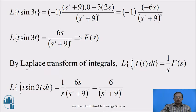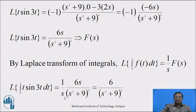By the property of Laplace transform of integrals, Laplace of integration with limit 0 to t of f of t dt equals 1 upon s into F of s. By this property, Laplace transform of integration with limit 0 to t of t into sin 3t dt equals 1 by s into 6s upon (s square plus 9) squared. Now s and s get cancelled, giving the required answer 6 upon (s square plus 9) squared.